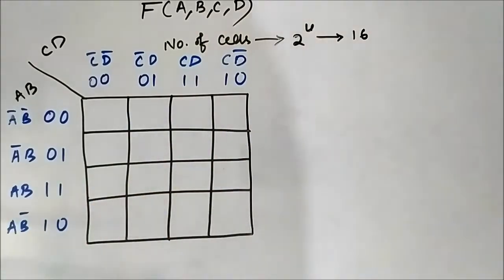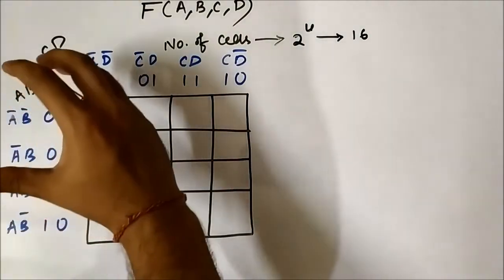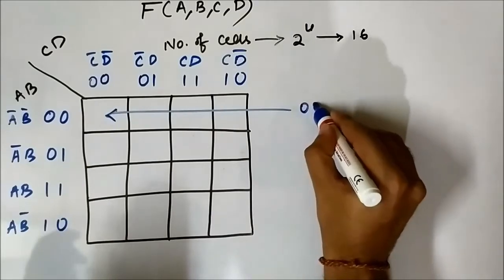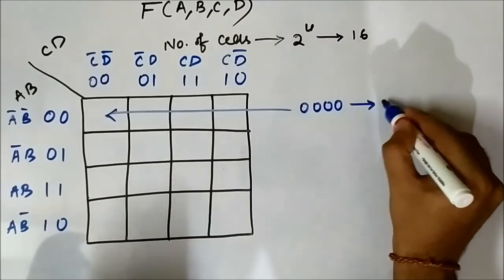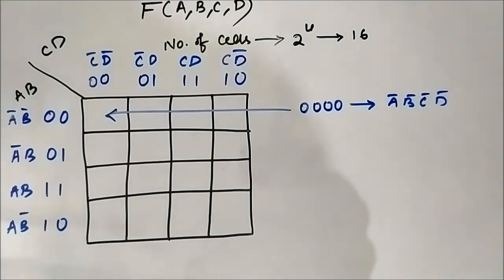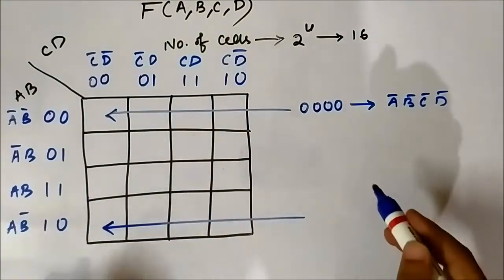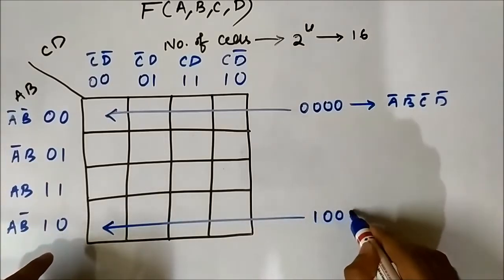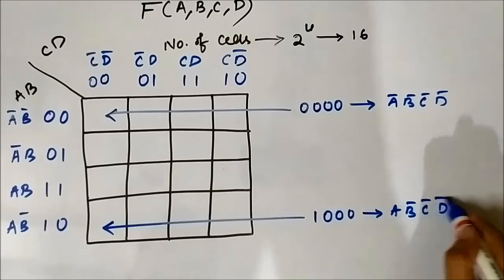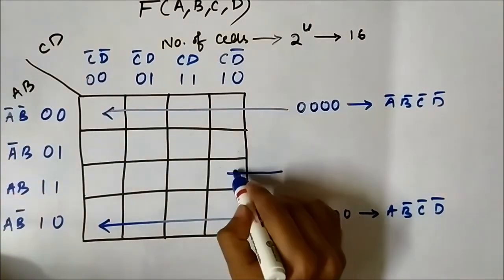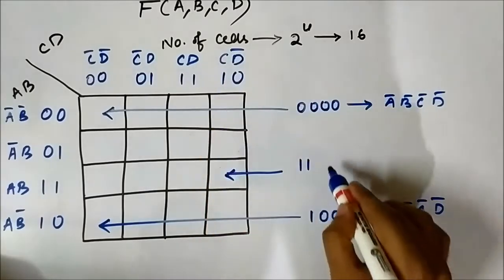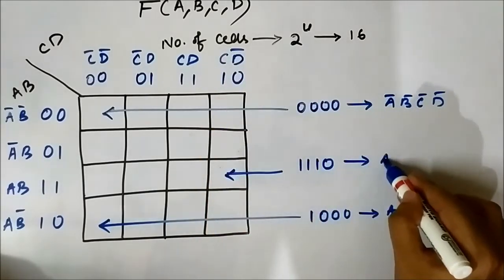Each of these cells represents a particular Boolean term. For example, the first cell is 0,0,0,0 which is A bar, B bar, C bar, D bar. This cell here stands for 1,0,0,0 — that is A, B bar, C bar, D bar. Similarly, this cell stands for 1,1,1,0 — that is A, B, C, D bar.